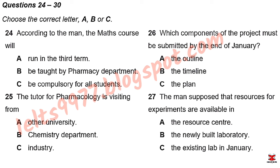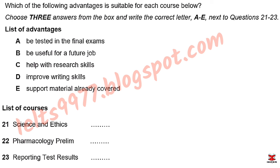You will hear two medical students, Caitlin and Hideki, discussing options for courses. Hi Hideki. I'm glad I bumped into you. Have you got five minutes to sit down and discuss our extra course options for next term? You mean the support courses for our modules? Yes. We've got three choices, and I'm not sure which would be best for us to do. We could do science and ethics. Sounds quite interesting. But I think we should be thinking what we get out of each course. There's a lot of reading and research to do, and I don't think it comes up in the exams. We have to do assignments and we get our score from that.